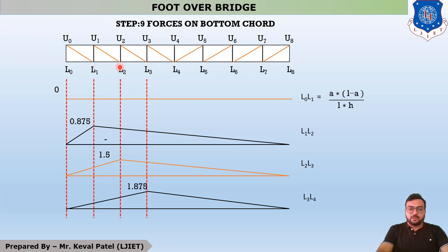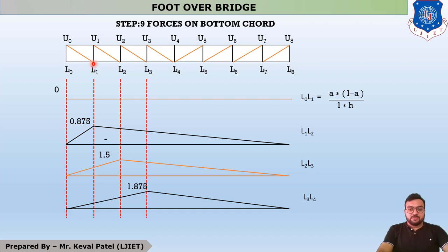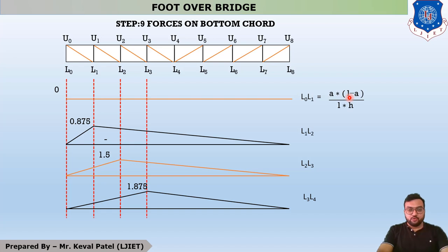Next is member L1L2. The rear member L1 takes maximum force. Using the same equation, A is equal to 3 metres because the panel length of this foot over bridge is 3 metres. L, the span of the bridge, is 24 metres, and H, the height of the vertical member, is also 3 metres. After putting all these values, we get the influence line diagram maximum value of 0.875.